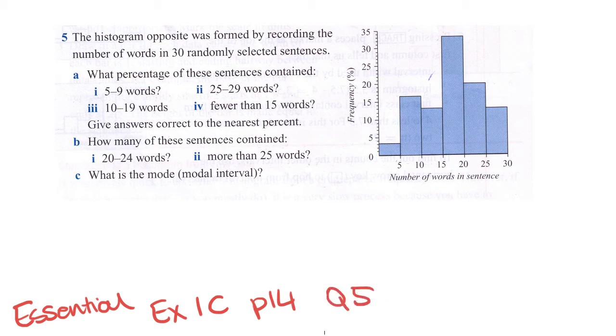This is about interpreting histograms. The question says the histogram opposite was formed by recording the number of words in 30 randomly selected sentences. The first part asks what percentage of these sentences contain 5 to 9 words.